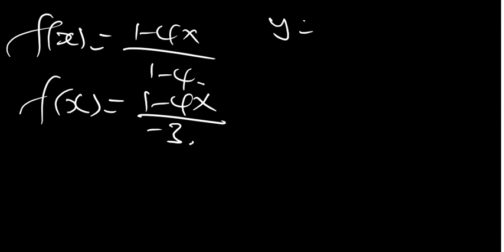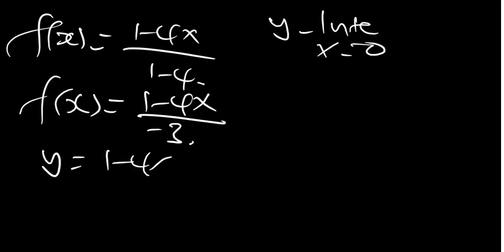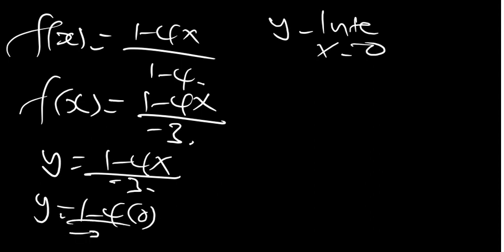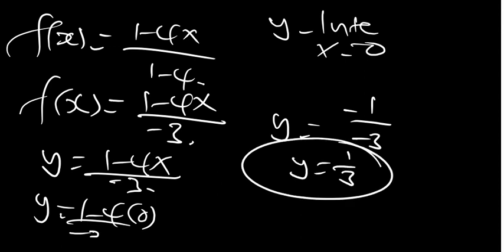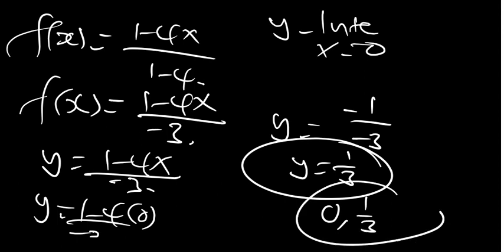Remember, when you're trying to find the y intercept, set x equal to 0. So we're going to have y is equal to 1 minus 4x divided by negative 3. We set x equal to 0, so y is equal to 1 minus 4 times 0 over negative 3. That gives y equal to 1 minus 0, which is 1, divided by negative 3. So y is equal to 1 over 3. That is our y intercept, represented as the point (0, 1/3).